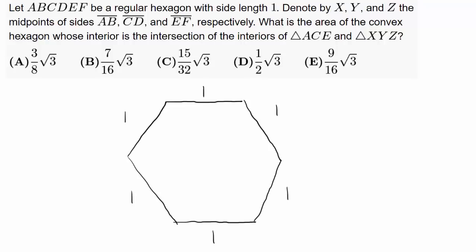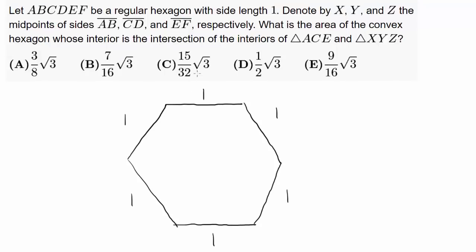Denote by X, Y, and Z the midpoints of sides AB, CD, and EF. So let's label AB, CD, EF. X is the midpoint of side AB — here's X. Y is the midpoint of side CD — here's Y. And Z is the midpoint of side EF — let's put it right there.